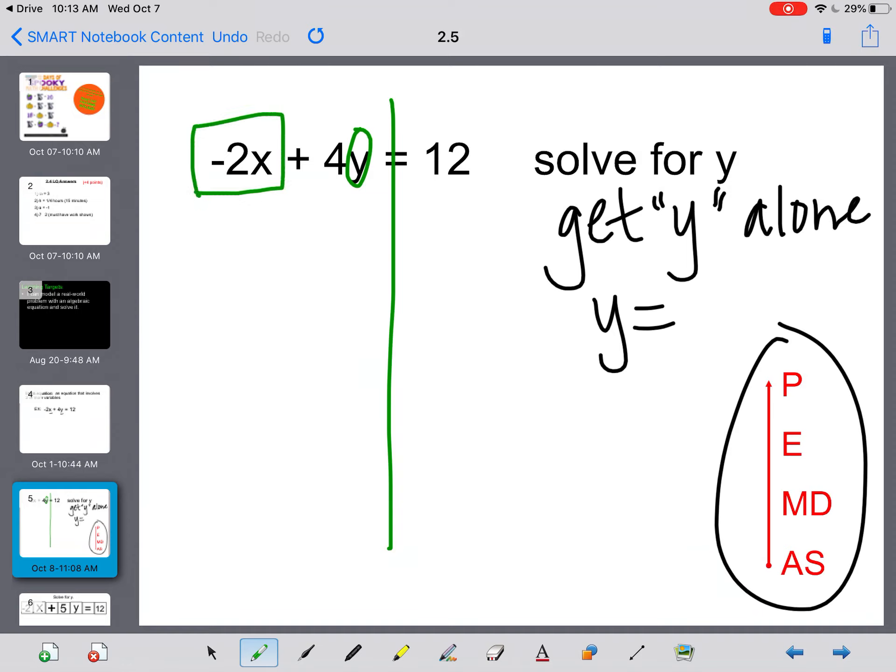Remember that what is being added to this y is this negative 2x. The whole thing is really just one term. So instead of having a negative 2x, I want to move it. So I need to do the inverse. The inverse of a negative 2x is a positive 2x. So I'm going to actually add 2x to both sides. That will eliminate the negative 2x from the left side, leaving me with just the 4y. And on the right side, 12 and 2x are not like terms. So I literally just write 12 plus 2x.